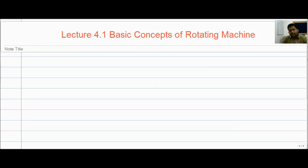Good morning to all of you, welcome to the pre-lecture series on electrical engineering. In this lecture 4.4, we are going to discuss the basic concepts of rotating machines. In the first part, we will discuss about how the torque is generated in the rotor whenever the number of poles in the rotor and in the stator is same or different. In the second part, we will discuss about how the AC is generated at the load.